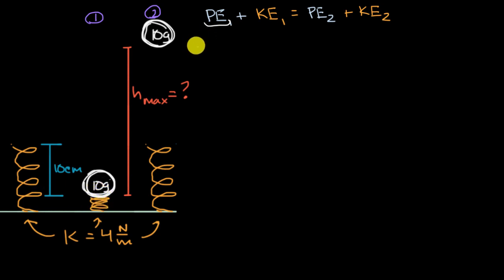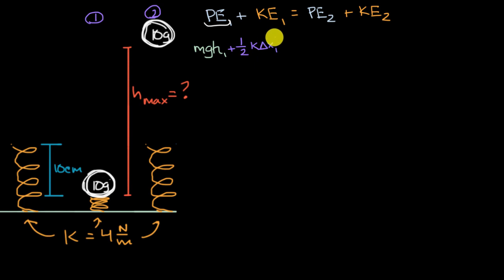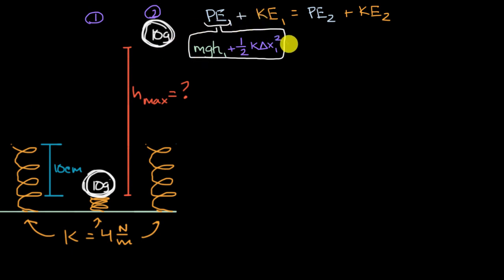There are two types of potential energy at play: gravitational potential energy and elastic potential energy due to the compressed spring. Gravitational PE equals mass times g times height in position one. Elastic PE equals one half times the spring constant times the compression squared. Adding kinetic energy — one half times mass times velocity in scenario one squared — gives us the total energy in scenario one.